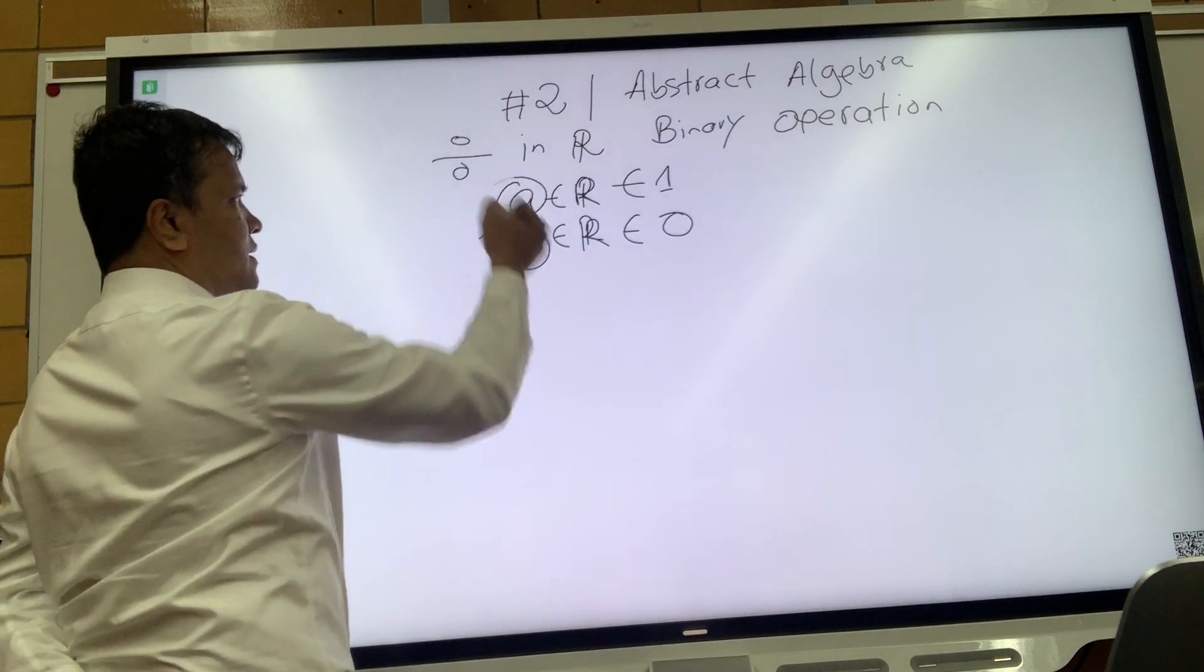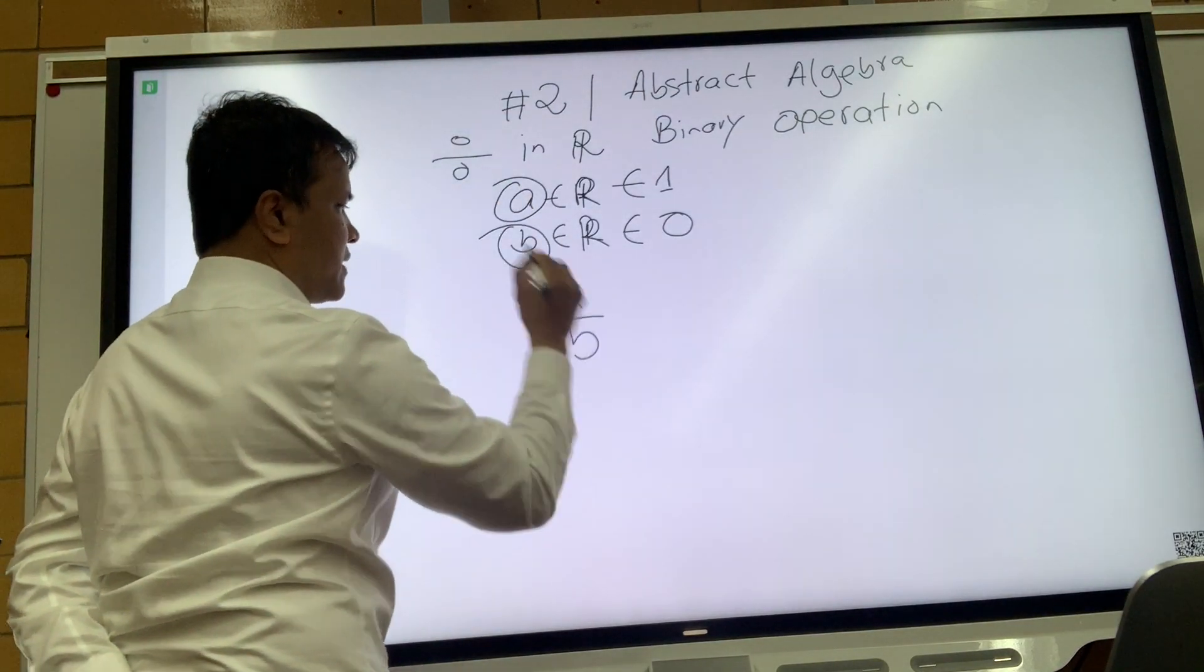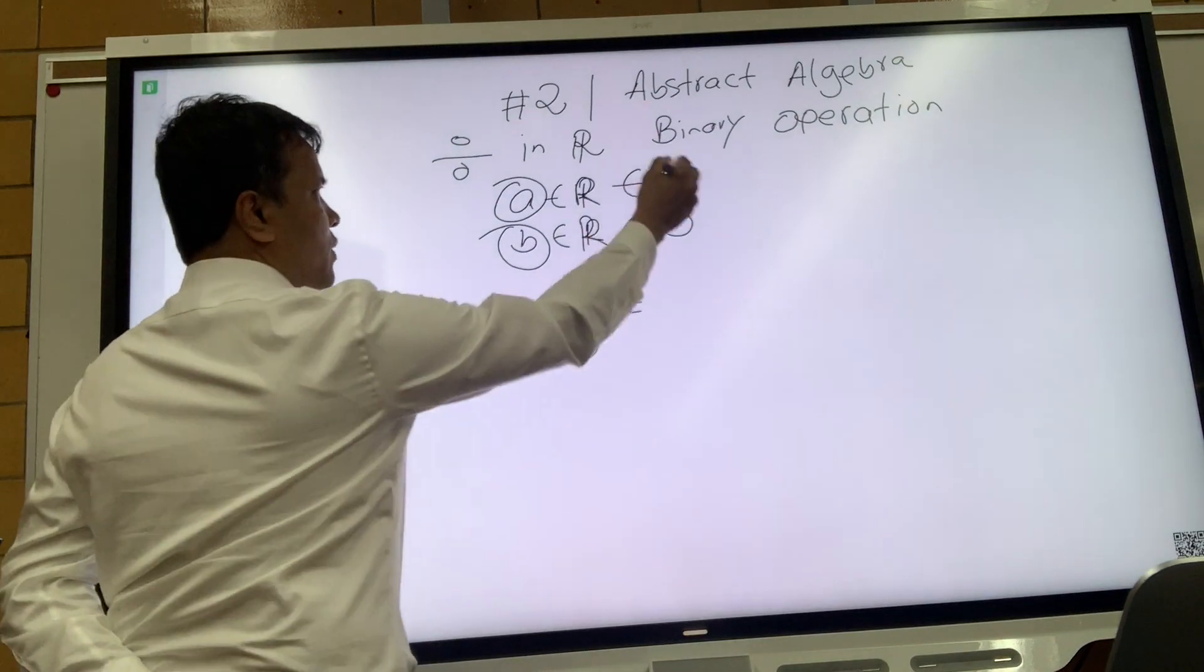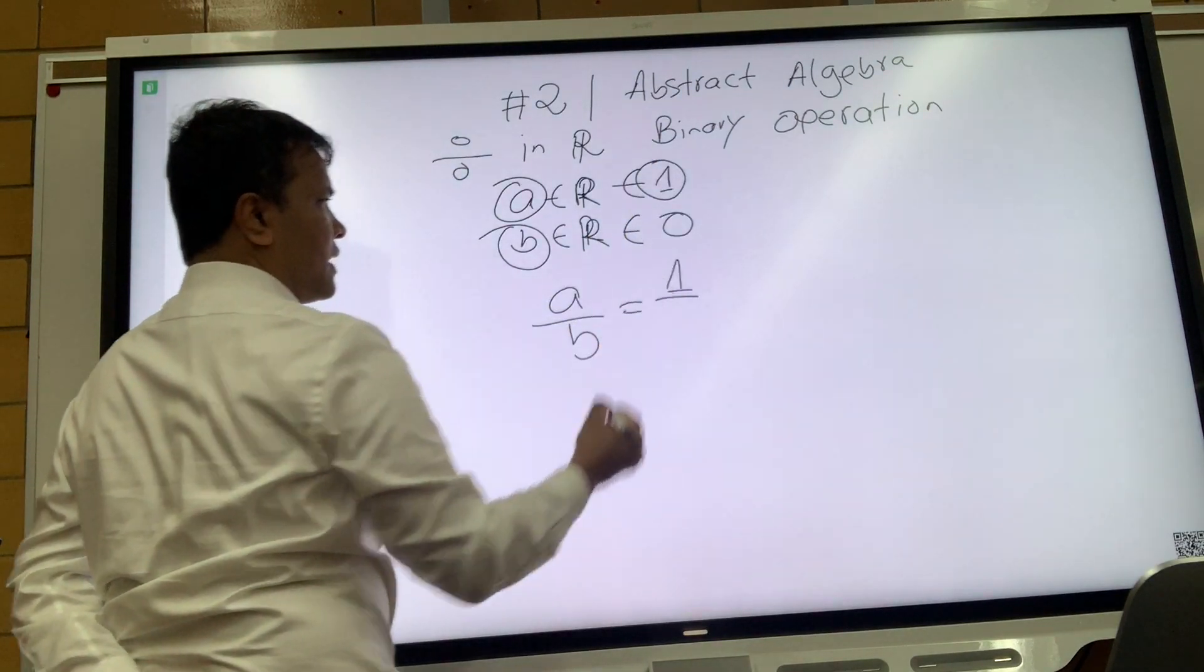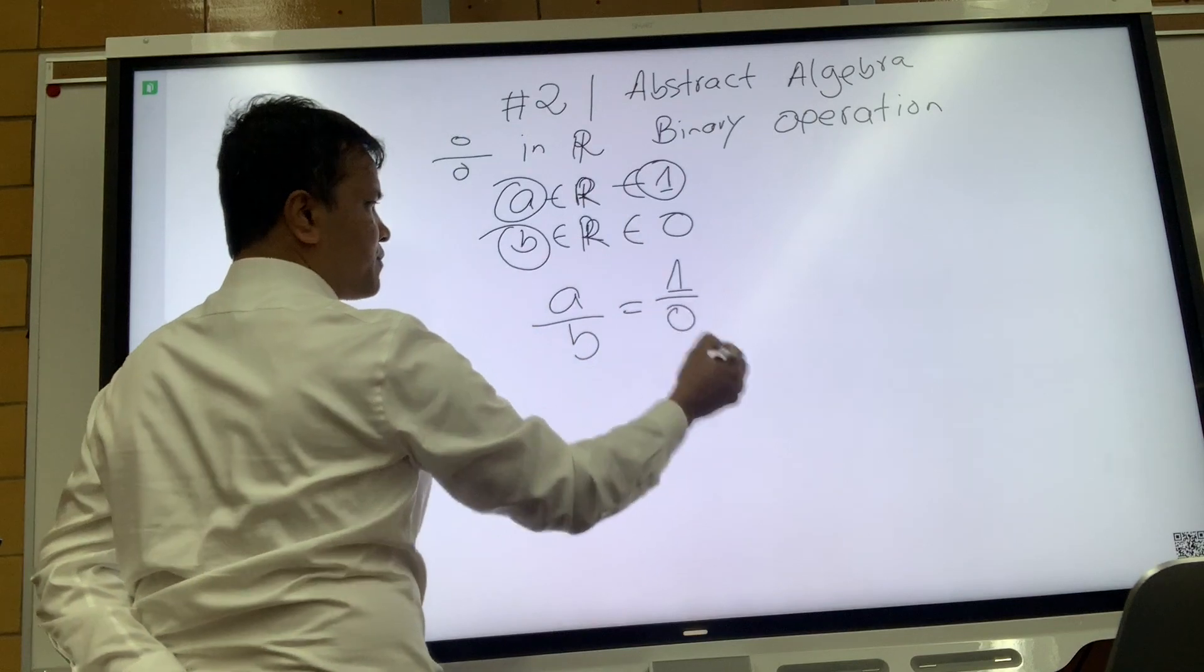So a divided by b, so 1 divided by... 1 divided by 0. 1 divided by 0 is...